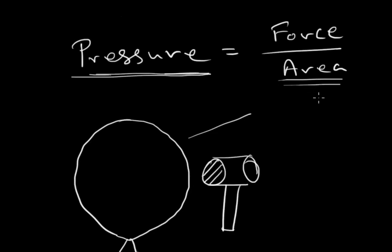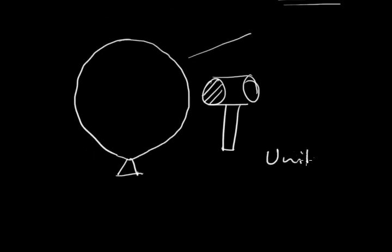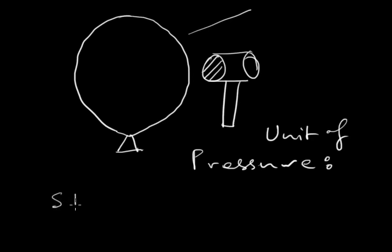The unit of pressure in CGS system and SI system. So, in SI system the unit of pressure is unit of force in SI system divided by unit of area in SI system, which is Newton per meter square or Pascal.